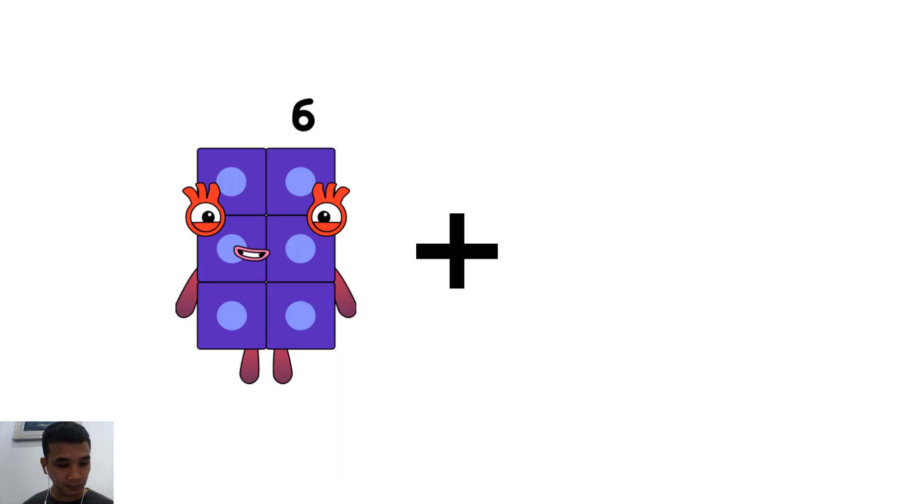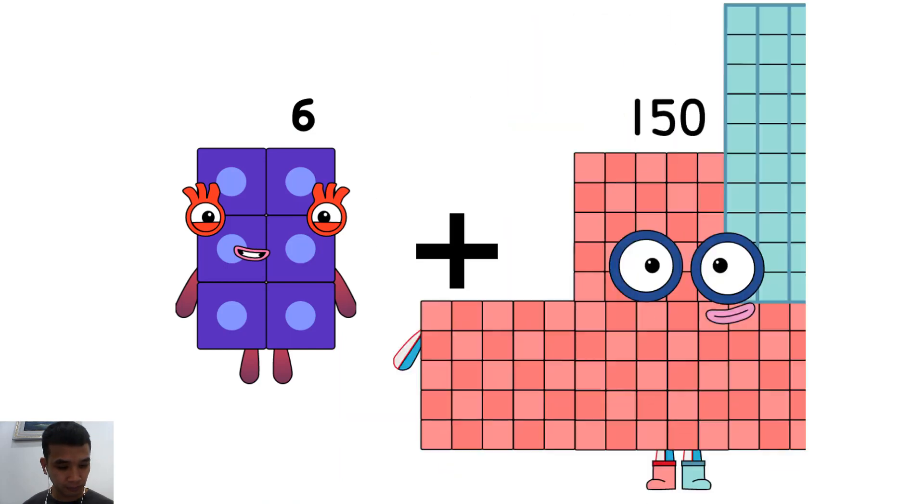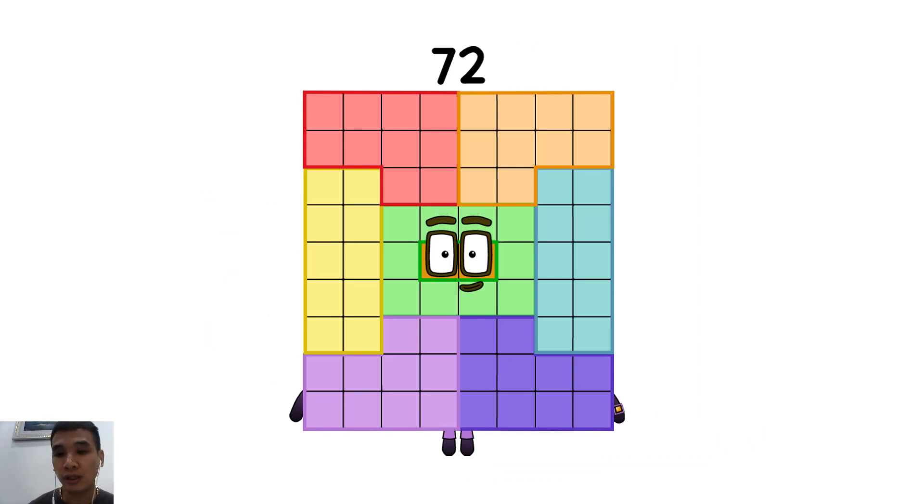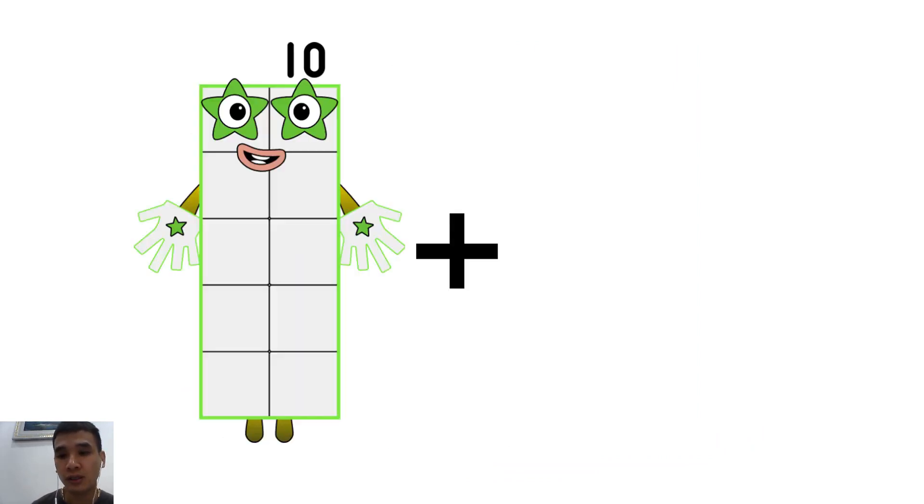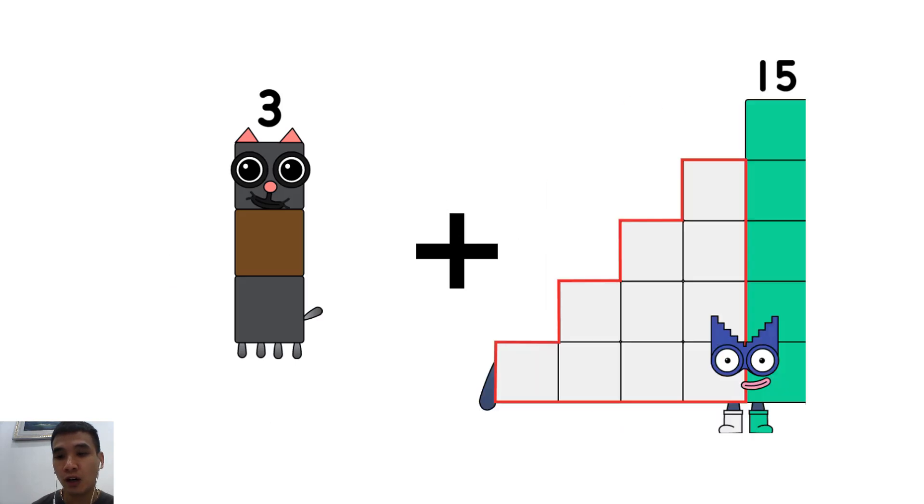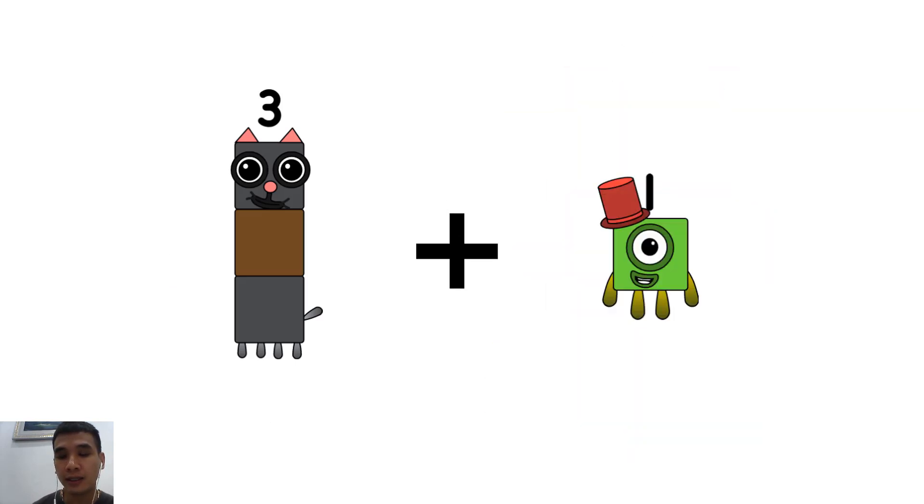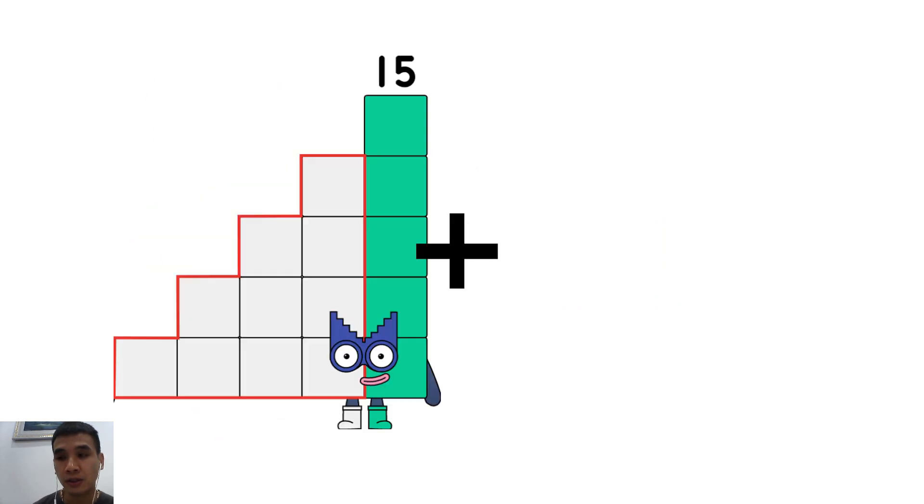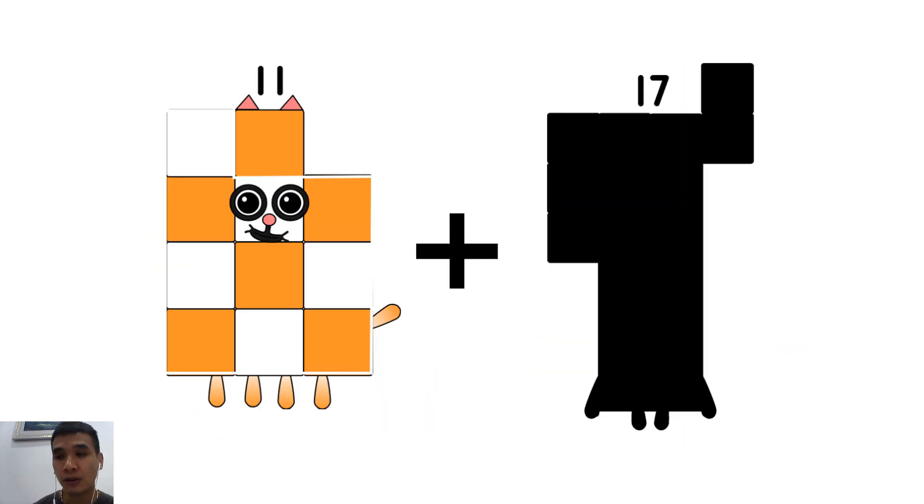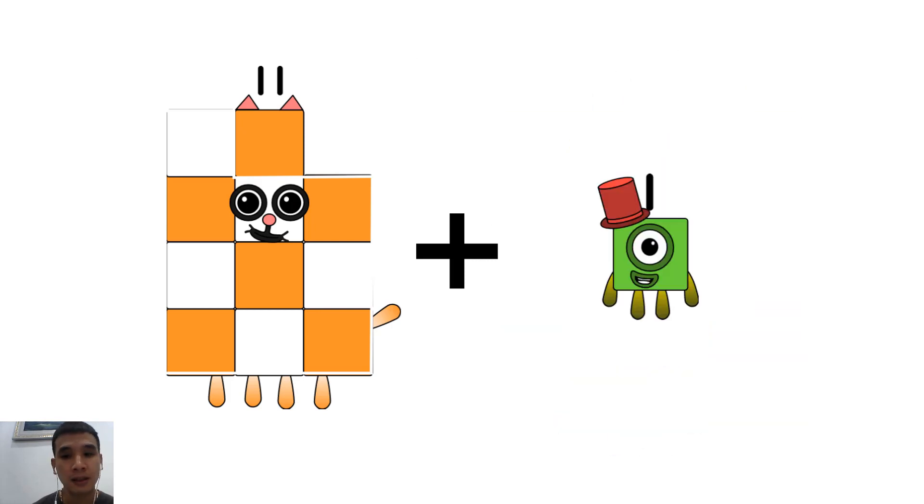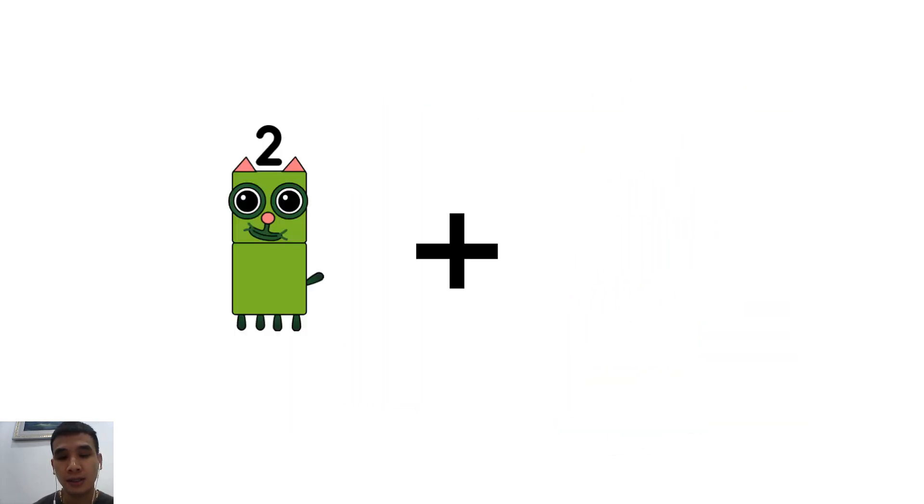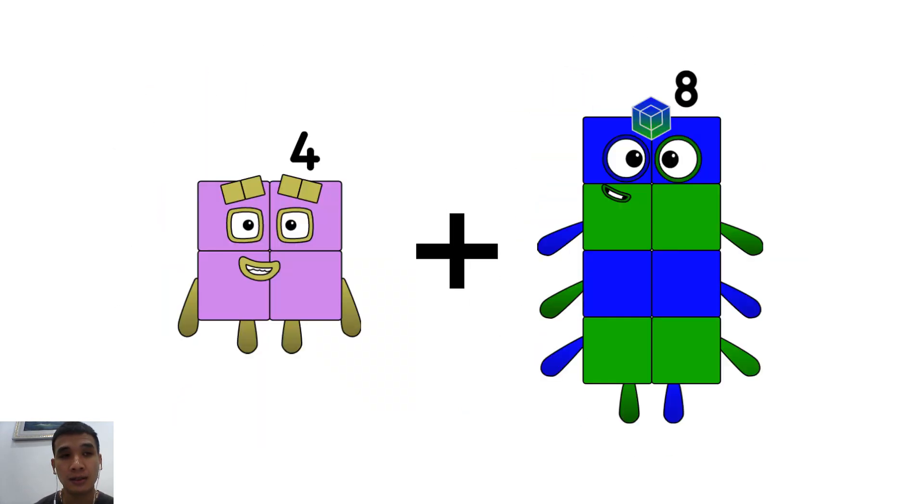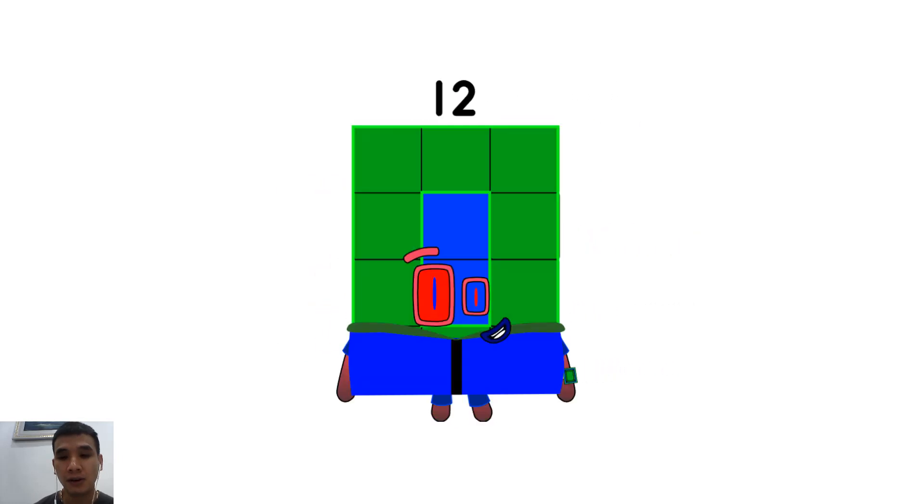6 plus 66 equals 72. 3 plus 1 equals 4. 11 plus 1 equals 12. 4 plus 8 equals 12.